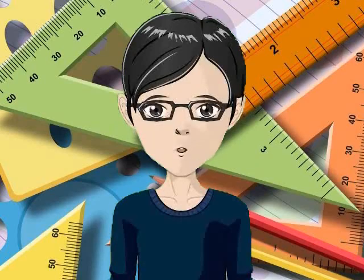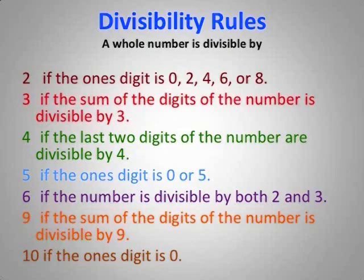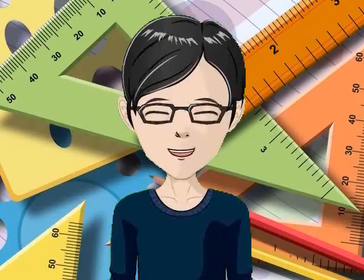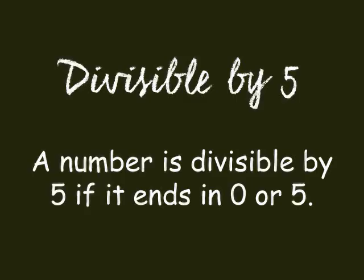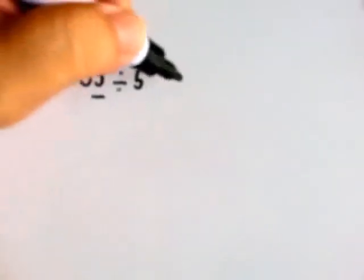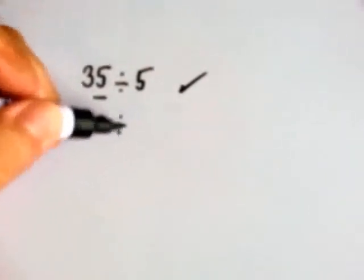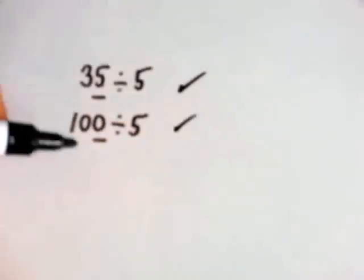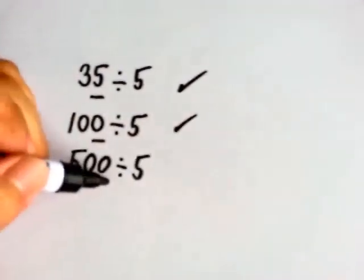But that is only the rule for numbers divisible by 2. There are other rules for divisibility. Tingnan natin yung susunod. To quickly check if a number is divisible by 5, just check if the number ends in 0 or 5. That is easier, right? Iti-check lang natin if the number ends in 5 or 0. Is 35 divisible by 5? Yes, it is — it ends in 5. Is 100 divisible by 5? Yes, it is — it ends in 0. Is 500 divisible by 5? Yes, it is — it ends in 0.